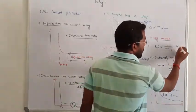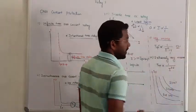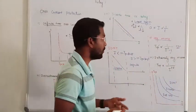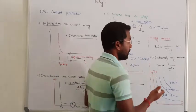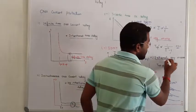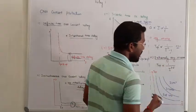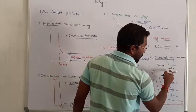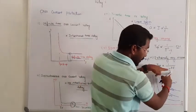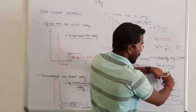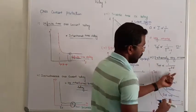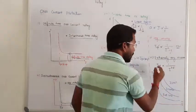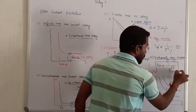The value of n is always different for different relay types. For very inverse, the operating time-current relation uses a value where operating time is inversely proportional to the current, approximately proportional to 1 divided by (I/I_pickup) raised to a power.